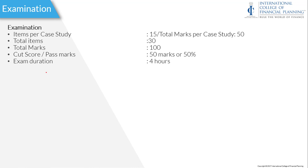Generally, two sample case studies are given by the FPSB. Apart from that, five case studies will be given in advance, and out of those, two case studies will come in the exam. You can receive the case studies before the exam, but the questions will directly come in the exam. In each case study, there are 15 questions worth 50 marks. With two case studies, total questions will be 30 and total marks will be 100.